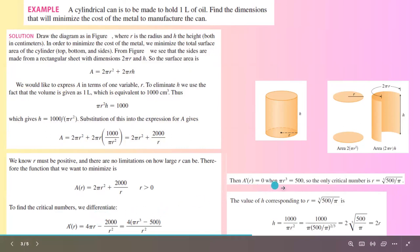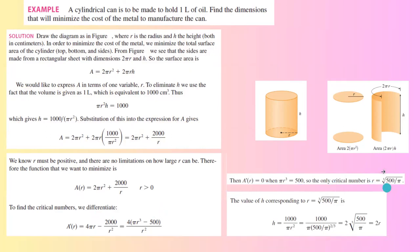When you set it equal to zero, in simplified form, r becomes the cube root of 500/π.